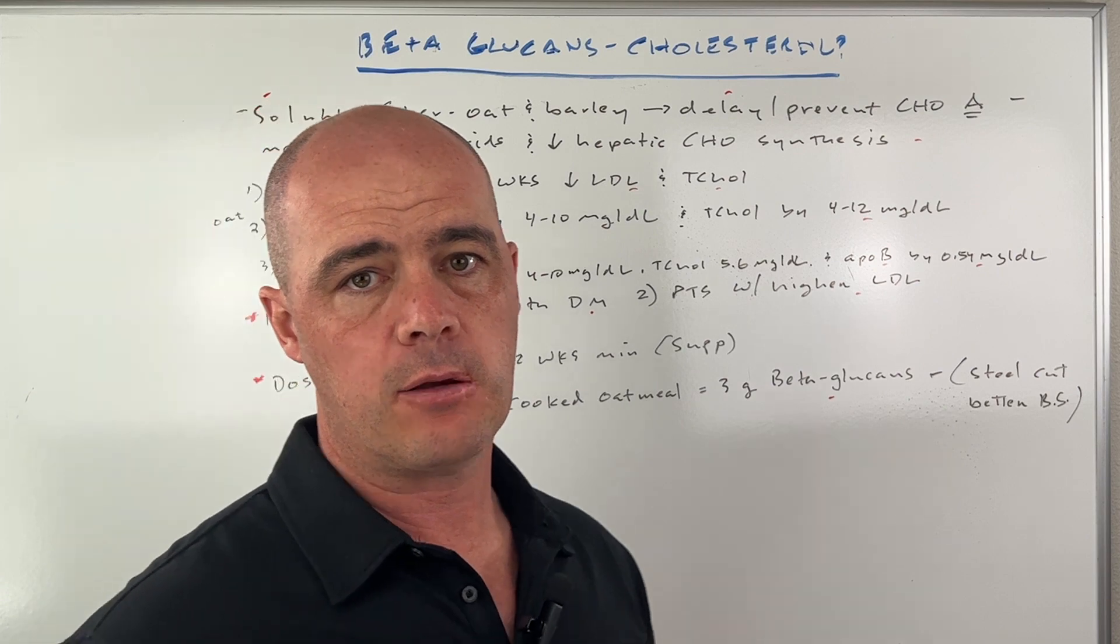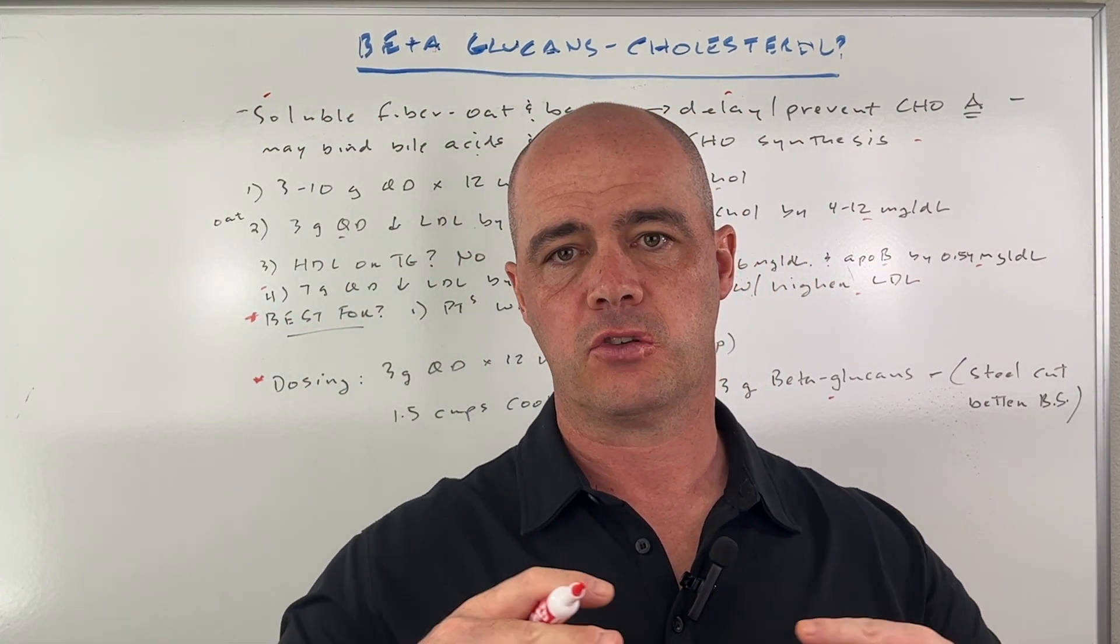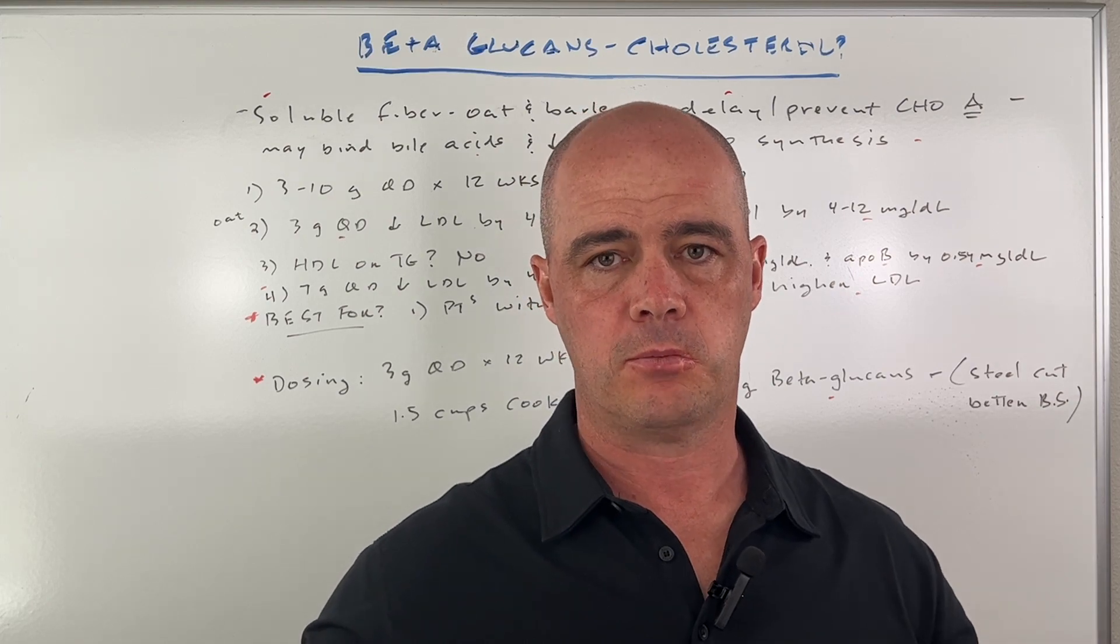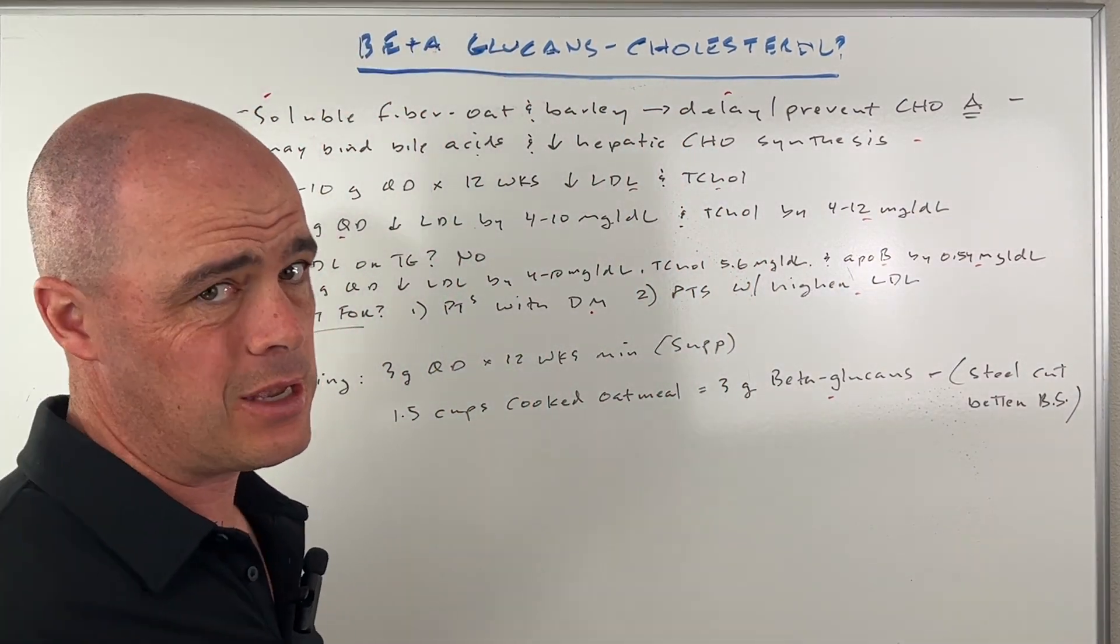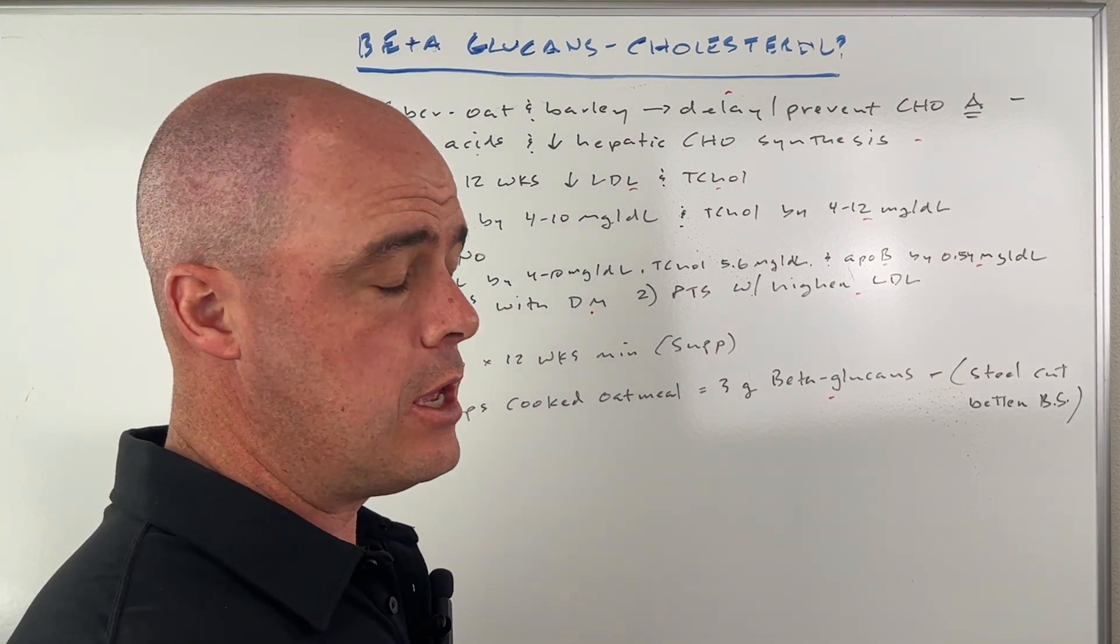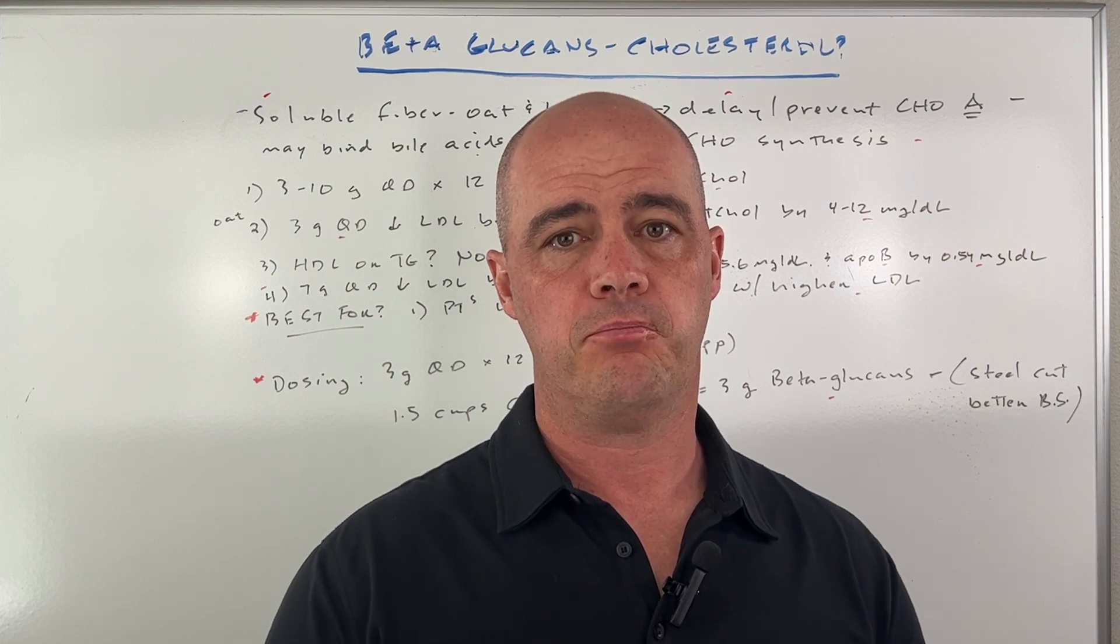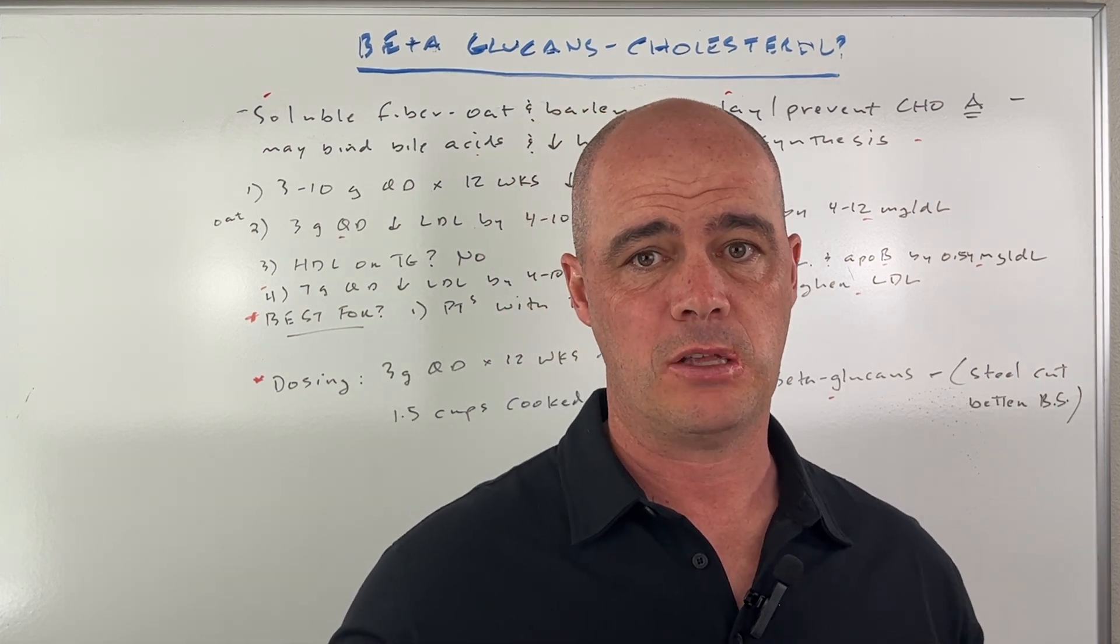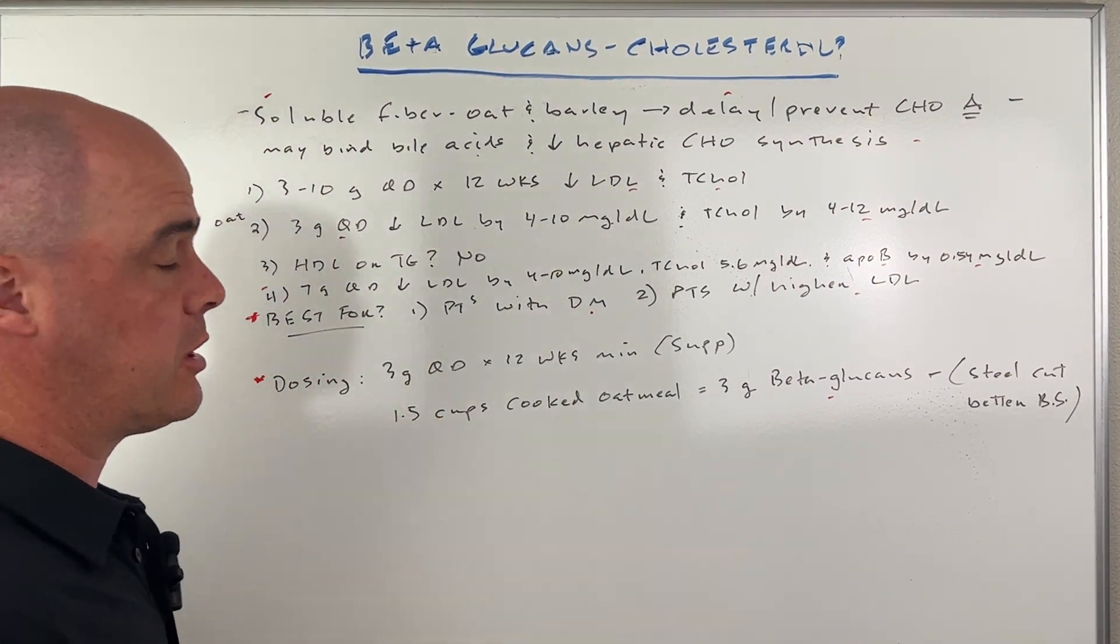If you're going to do that, I would stay with the steel cut oats. Try to stay as clean on the oats as possible just because of the blood sugar swings and also some of the glyphosates and things that we have in our oats and barley. I'm going to include a link to a company I found that doesn't use any Roundup glyphosates on their products.